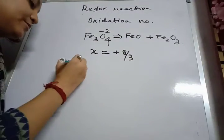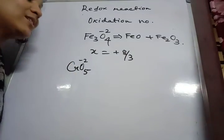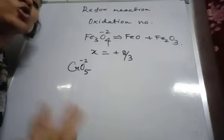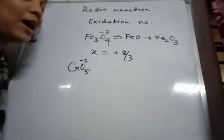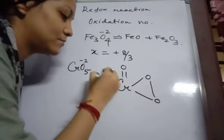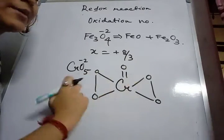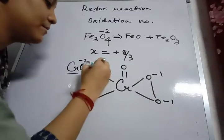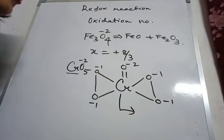Next exception is CrO5, chromium pentoxide. If you follow the usual method and take all oxygens as minus two, you get the oxidation state of chromium as plus ten, which is never possible since chromium's oxidation state cannot go beyond six. That means not all oxygens are present as oxides — some are present as peroxides. The structure of CrO5 has two peroxide bonds. Assigning the peroxide oxygens as minus one each and one oxide oxygen as minus two, the oxidation state of chromium comes out to plus six.